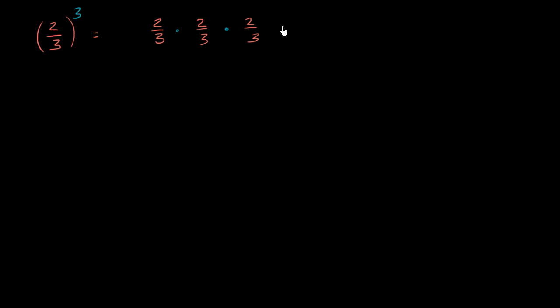and we will get, let's see, the numerator will be 2 times 2 times 2, which is 8. And the denominator is going to be 3 times 3 times 3, which is equal to 27.